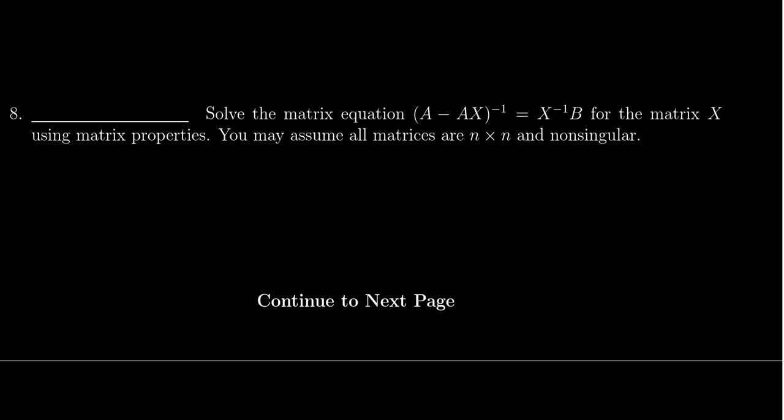So what I actually want to do is start off by taking the inverse of both sides. I'm going to take the inverse of the left, and I'm going to take the inverse of the right. What's good for the goose is good for the gander. You have to make sure you do it to both sides. Now, if you take the inverse of the inverse, that's just the original function. So the left-hand side turns into A - AX.